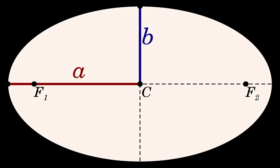In geometry, the major axis of an ellipse is its longest diameter, a line segment that runs through the center and both foci, with ends at the widest points of the perimeter. The semi-major axis is one-half of the major axis, and thus runs from the center, through a focus, and to the perimeter.